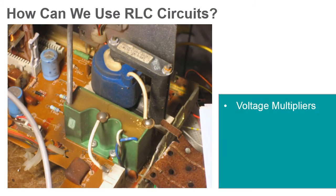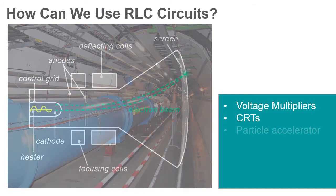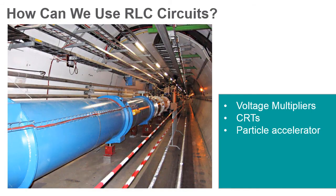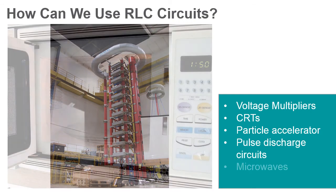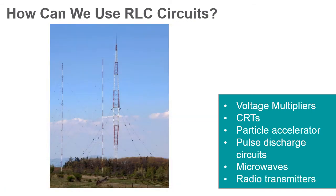RLC circuits can also be used as oscillators, which can be low frequency, audio frequency, or radio frequency. They are used to build voltage multipliers that produce the high voltages used by cathode ray tubes in television sets and even particle accelerators. RLC circuits are also used in pulse discharge circuits that are used in microwaves and radio transmitters.